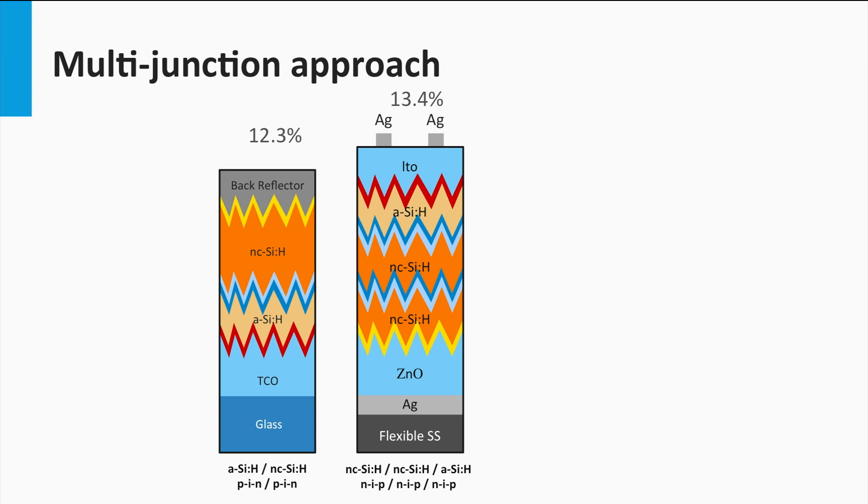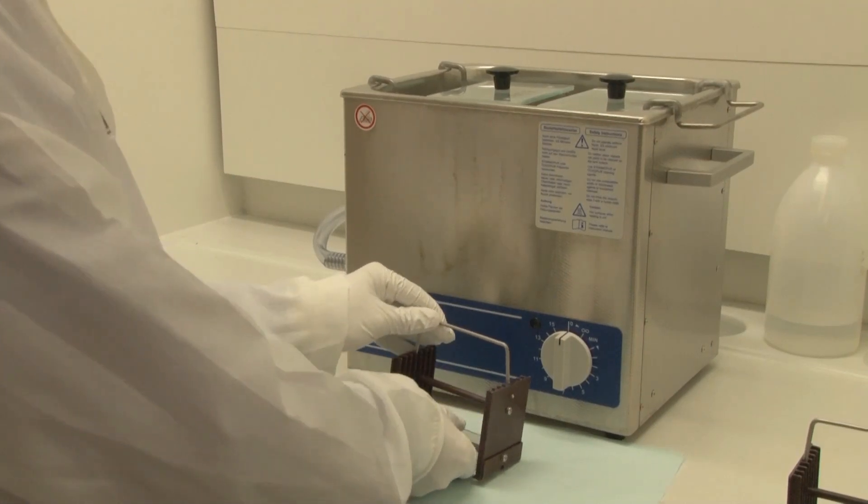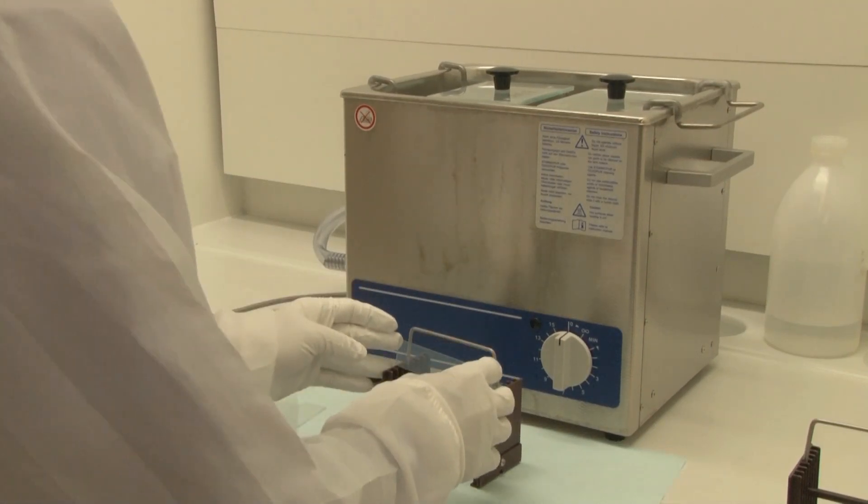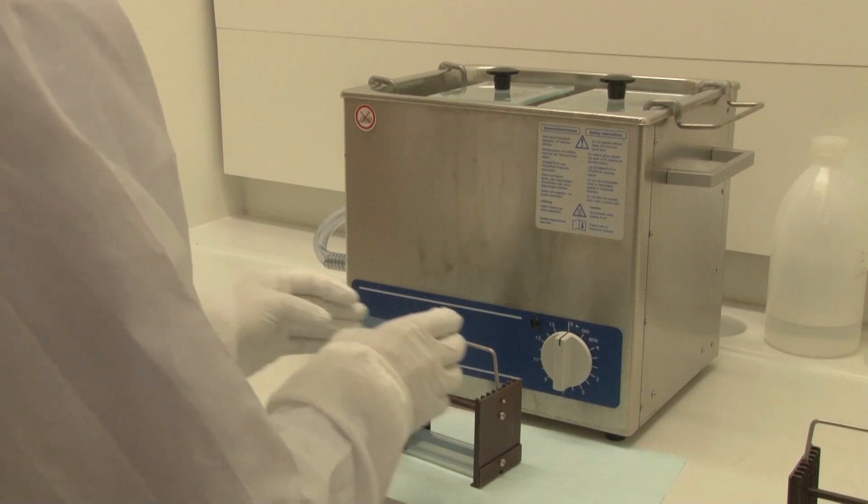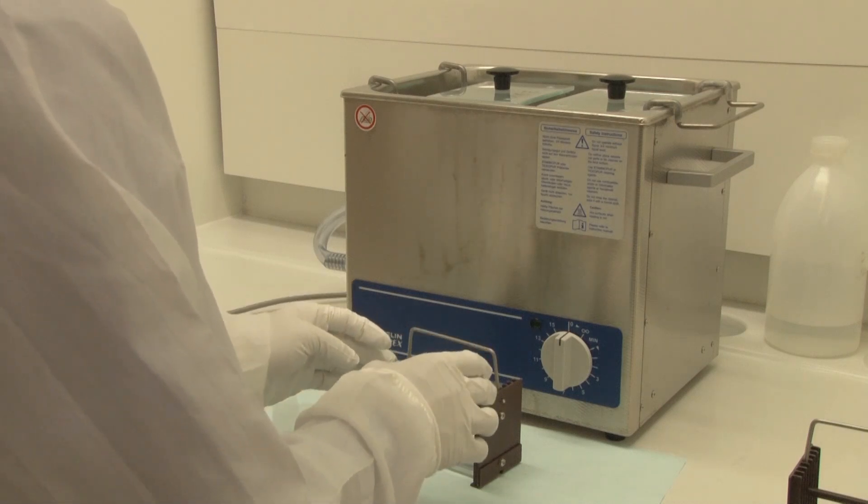Nowadays, doped nanocrystalline silicon oxide layers are used as intermediate reflective layers. They have the bifunctionality of generating the built-in field over the absorber layers and to act as transparent intermediate reflective layers. Let's go to the DEMIS lab at the Delft University of Technology. We will show how thin-film silicon solar cells are made on lab scale.